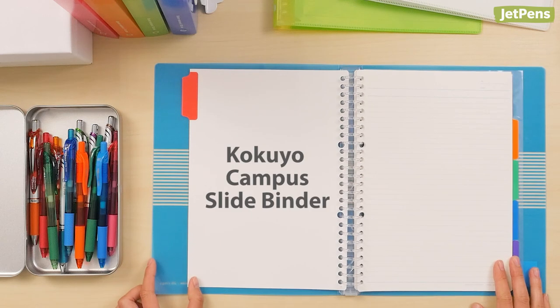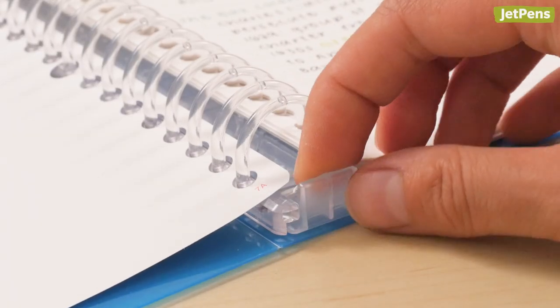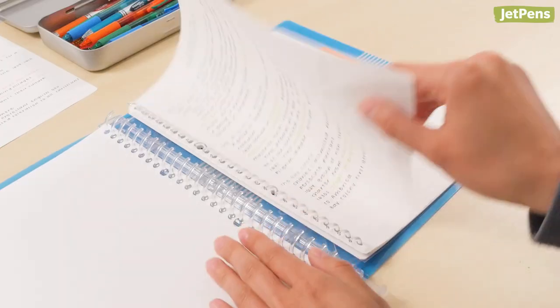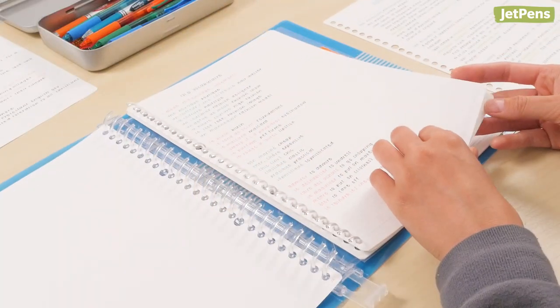The Kokuyo Campus slide binders are named for their unique ring mechanism. Just a touch will slide the rings open or closed. No need to worry about pinched fingers or disruptive noises. These binders pair perfectly with the Kokuyo Campus papers.